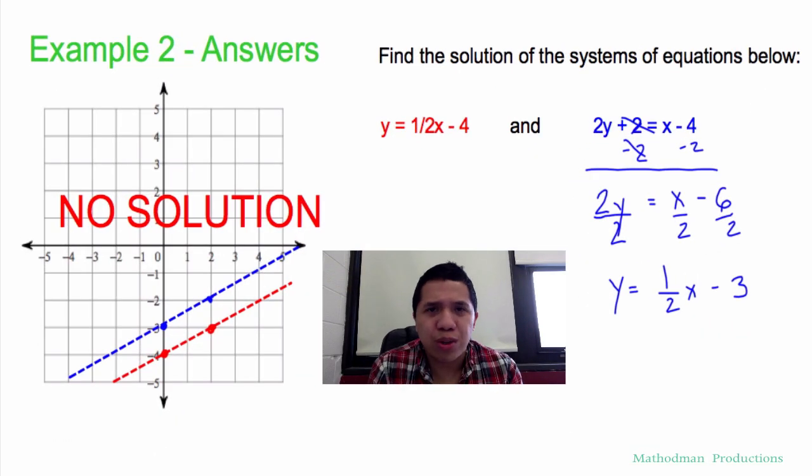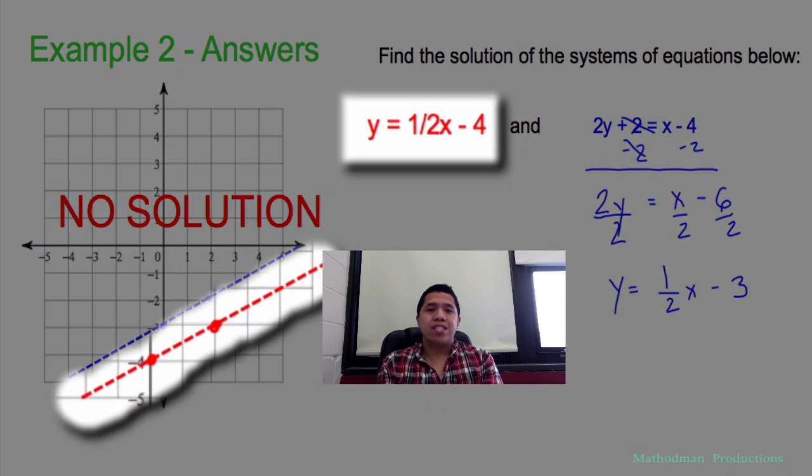I tried to trick you with this one. There's actually no solution to the systems. If you graph the first equation y equals one-half x minus four, it starts at negative four, up one over two.